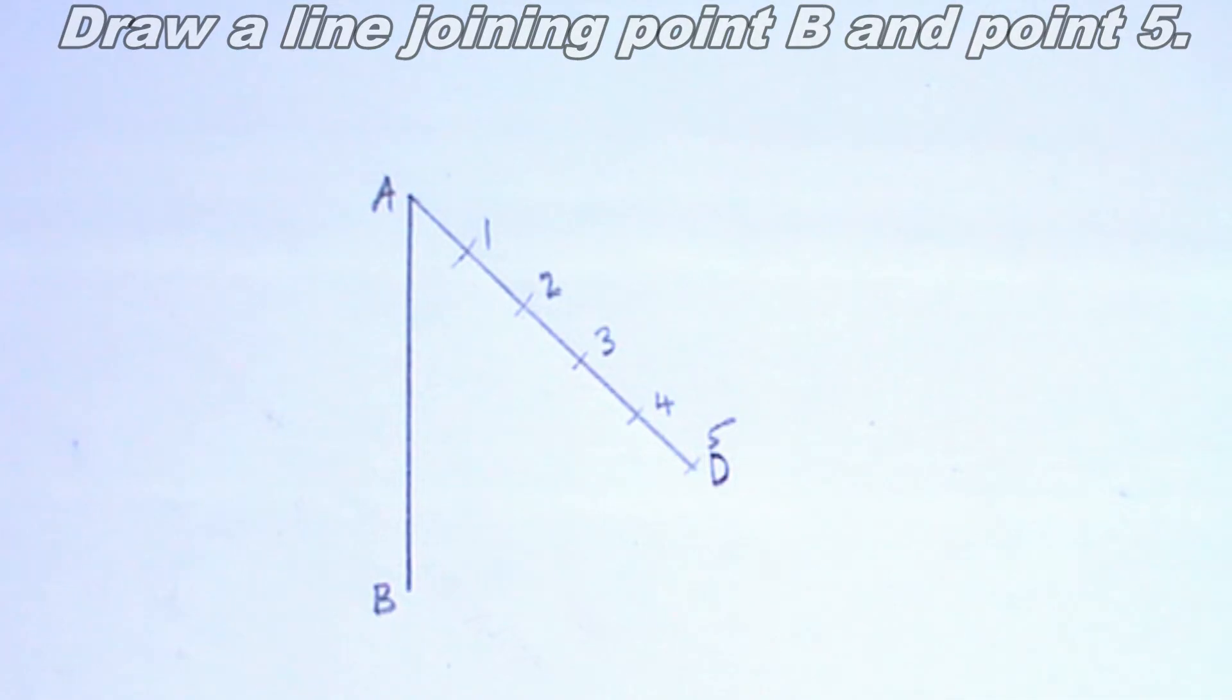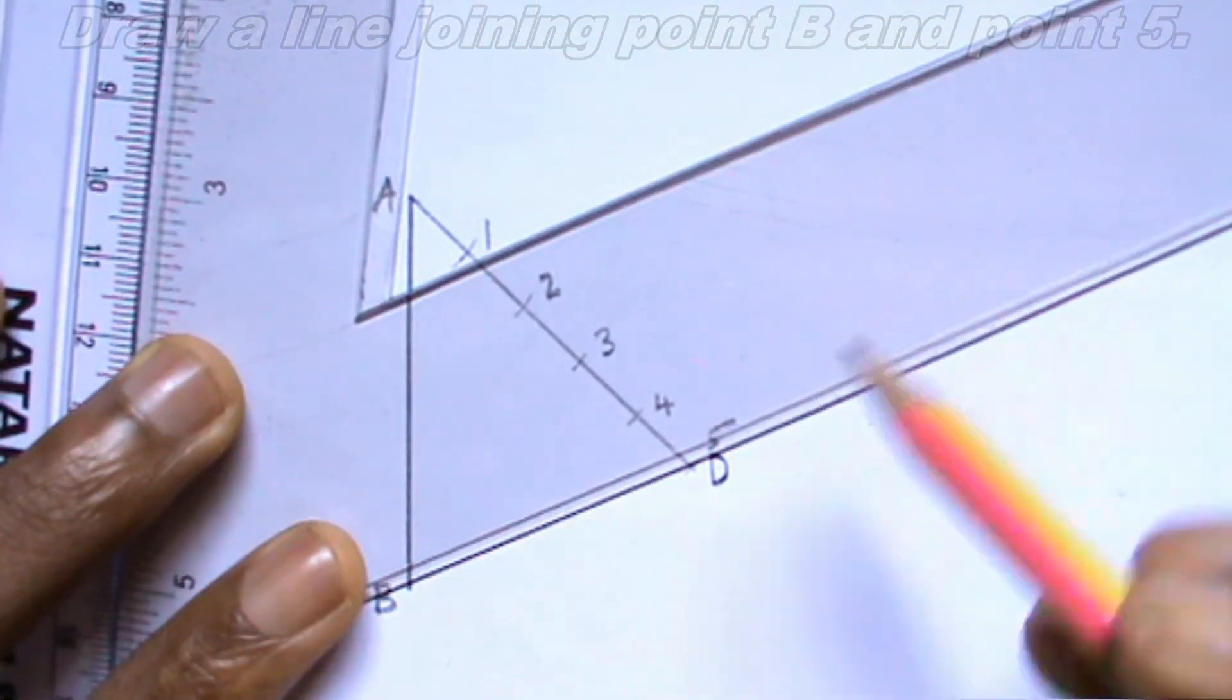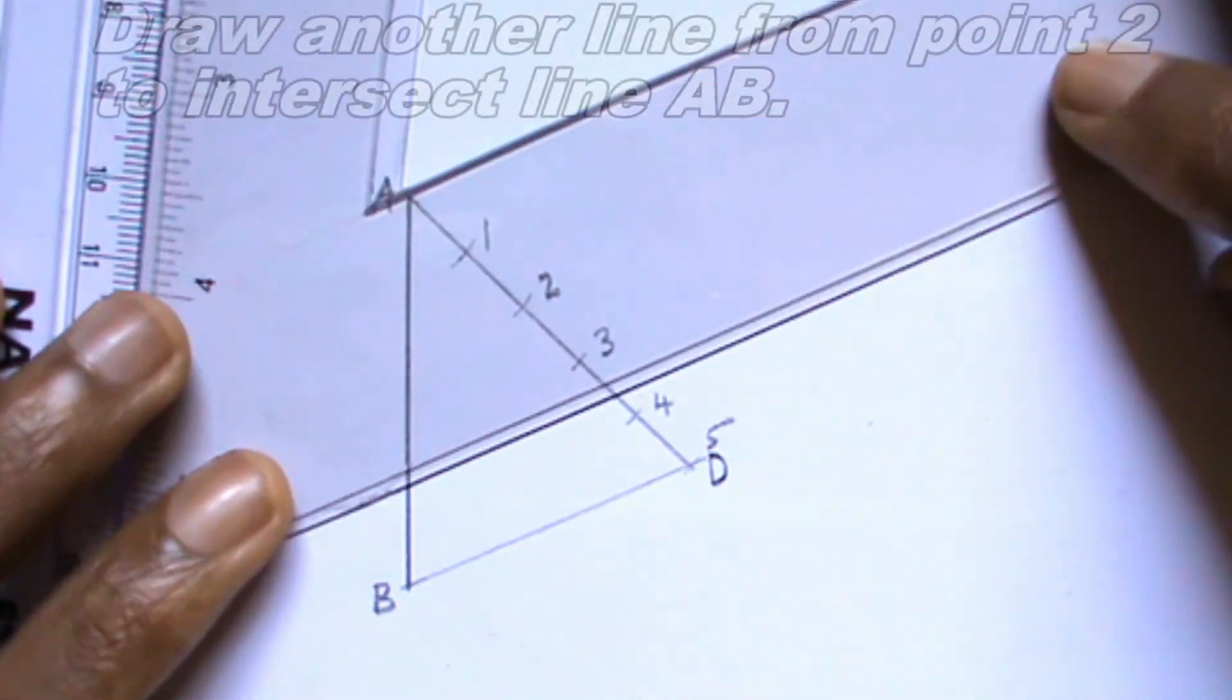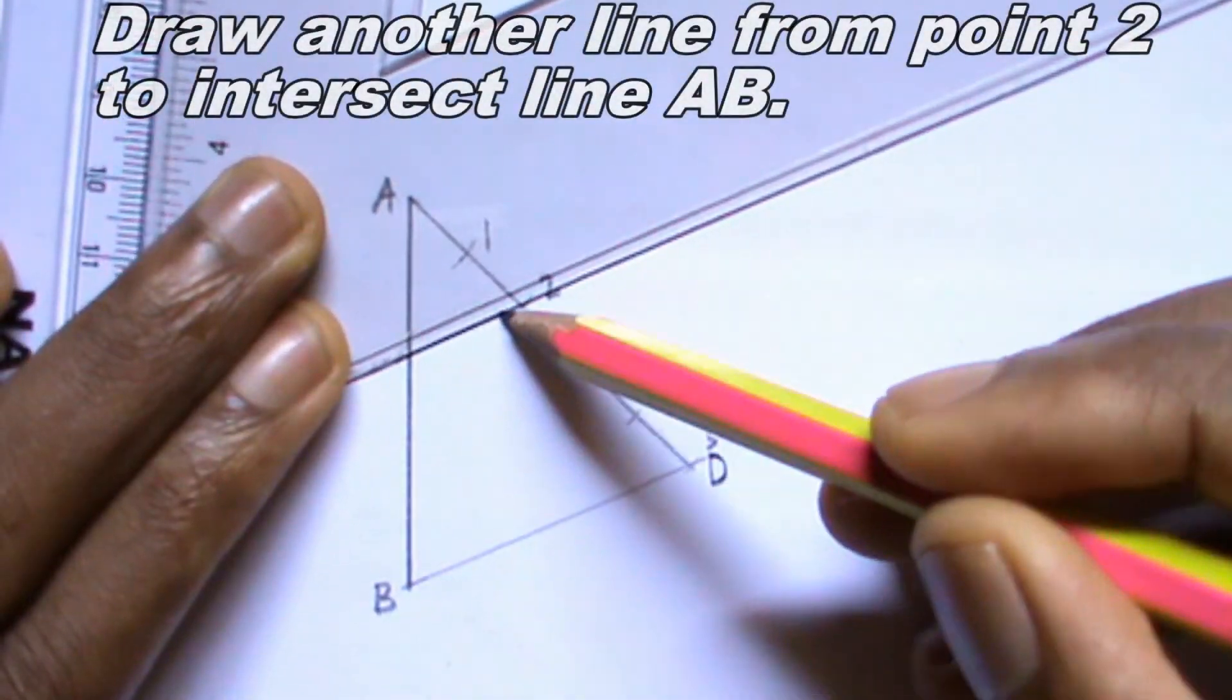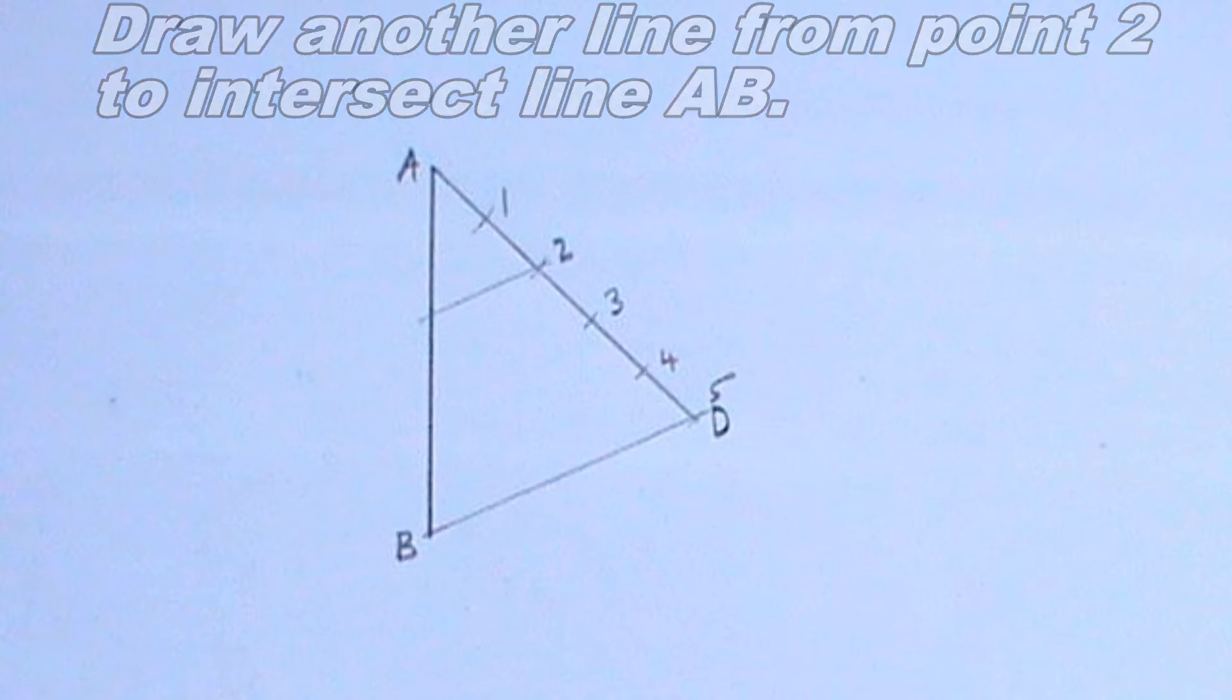The line should be parallel to line BD. I will label the point where the line intersects line AB, C.